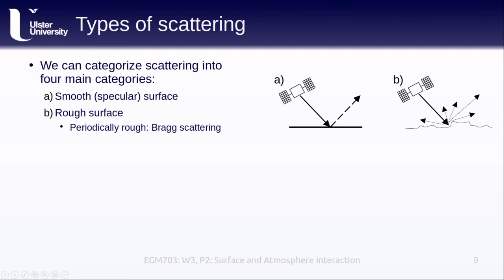Scattering from periodically rough surfaces is called Bragg scattering. Common examples of this might be wind-driven ocean surfaces, where we get this regular pattern on the ocean surface as a result of the wind, or we might see crop types that are planted in regular rows, or similarly agricultural fields that are plowed in a regular pattern. So these regular patterns cause a scattering that is known as Bragg scattering.